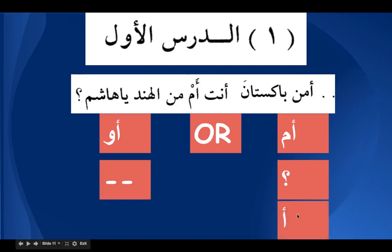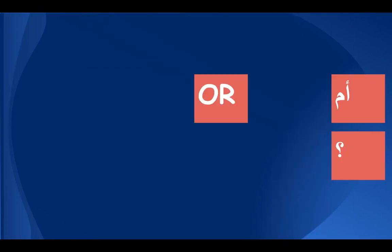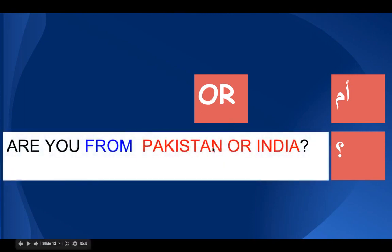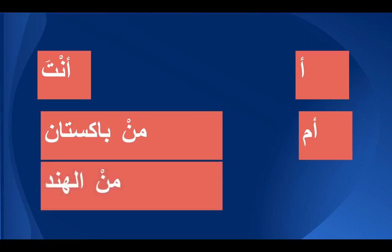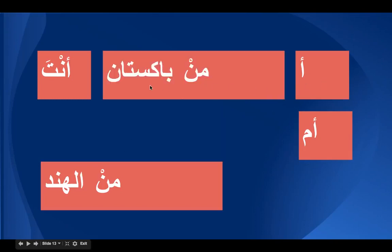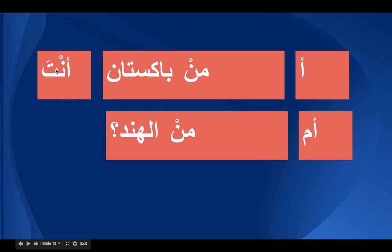Most of the time you will see a as the beginning of the question. In English, 'Are you from Pakistan or India?' places the two nouns one after the other. However, in classical Arabic, the first noun being compared comes after a, then the second comes after am. So we say: Amim pakistana anta ammin al-hind — not anta amin pakistana ammin al-hind, which is wrong.